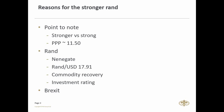So my point is: if the rand was at or below 11 rand 50, we could have argued we have a strong rand. But because it's not there, even though it's much better from the worst levels we saw at the end of 2015 — at 17.91 — that's why we say the rand is stronger, not strong.